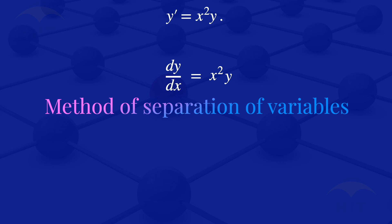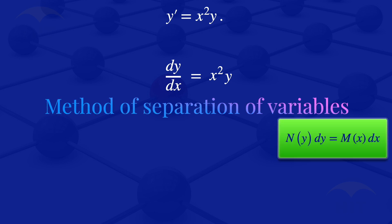The first-order ODE is said to be separable if we can write it in the form N of Y DY equals M of X DX. We can put the variables with Y on one side, variables with X on the other side.